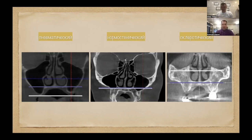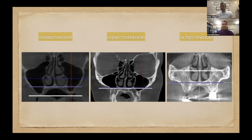Нормостеники: уровень дна пазухи на уровне дна носа, средняя выраженность кортикалки, средняя ячеистость — достаточно адаптированный вариант. У пациентов со склеротическим типом пазухи я больше наблюдаю у гиперстеников — у них не такие воздушные пазухи, иногда даже полная агенезия пазух, микросинусы и так далее.